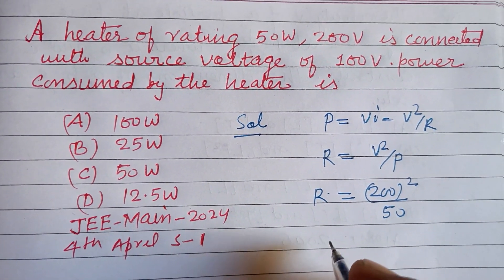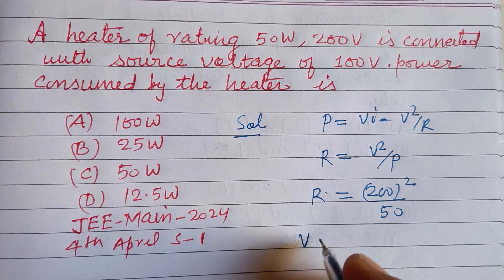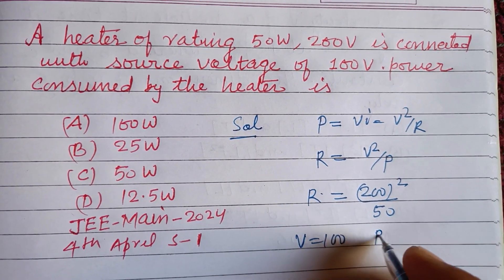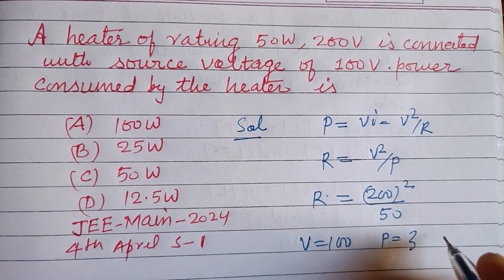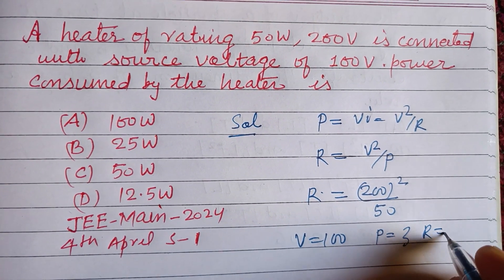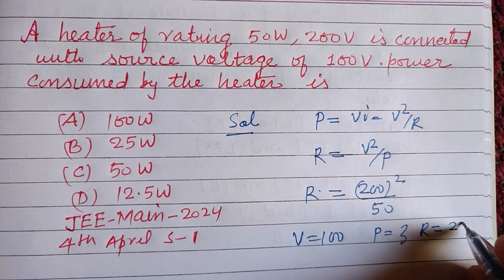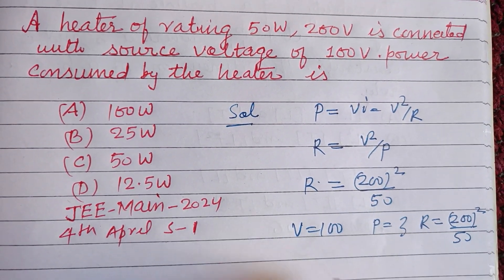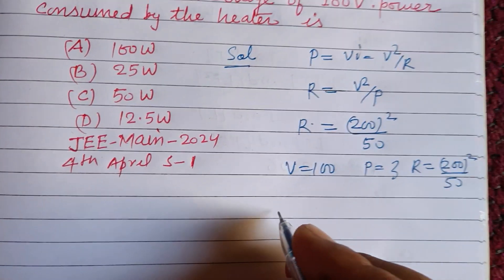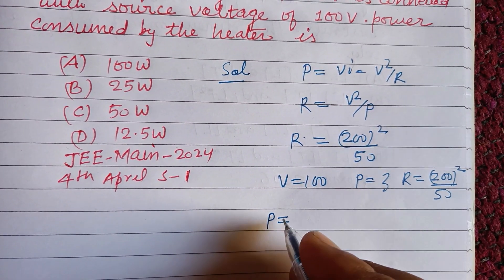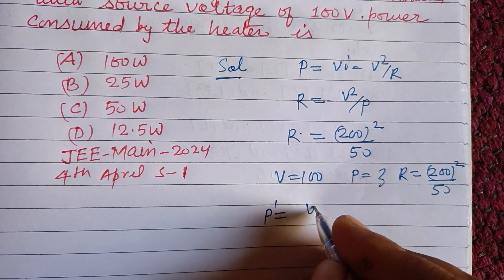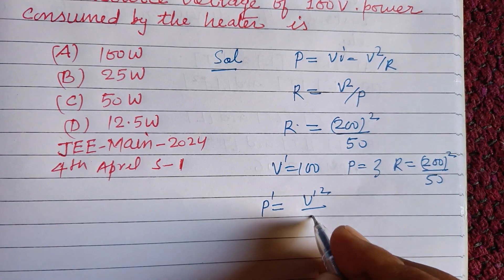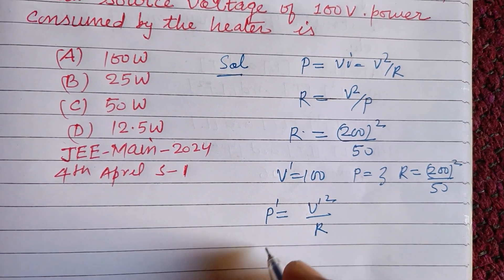In the second case, when voltage is 100 volt, the power P' is required. R is given as 200² / 50. So using P' = V'² / R.